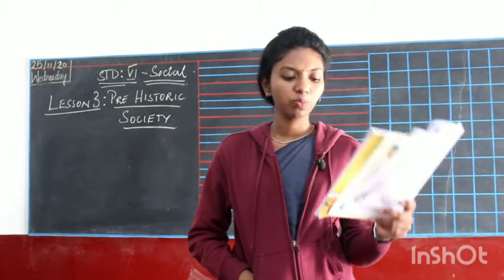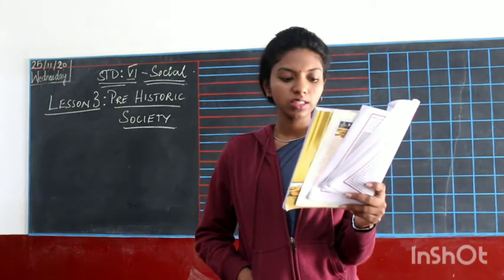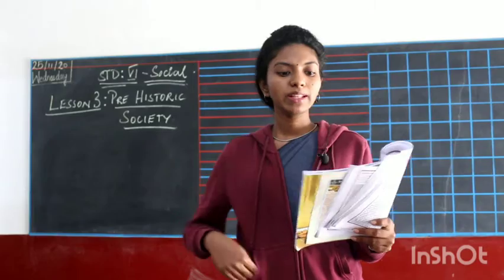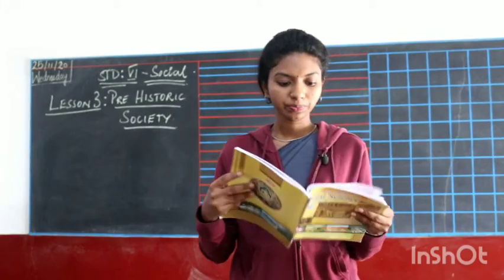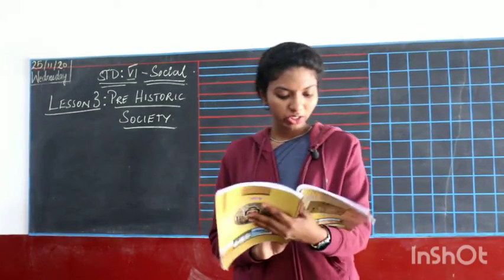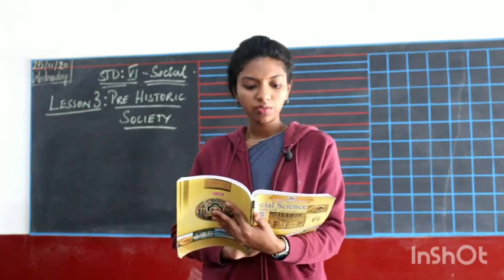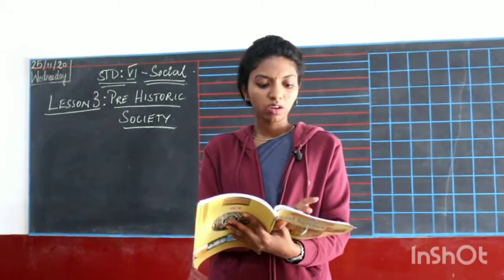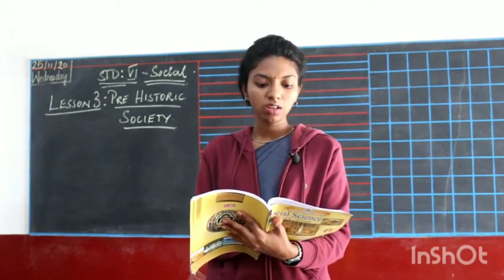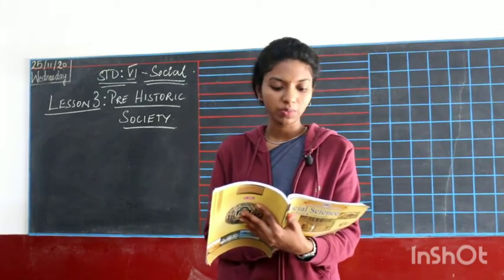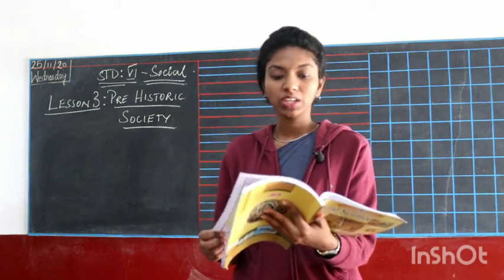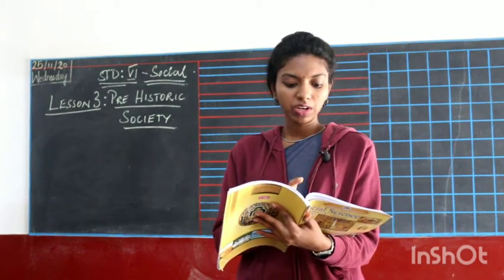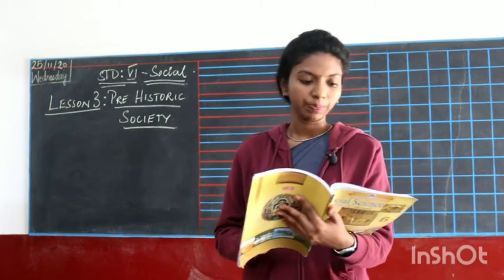It is believed that from Africa they migrated to various parts of the globe and settled. At present, this theory is subject to a lot of criticism. In page 60 there is a chart showing in which years which organisms were developed — it presents the information from page 59's second paragraph in a clearer manner.